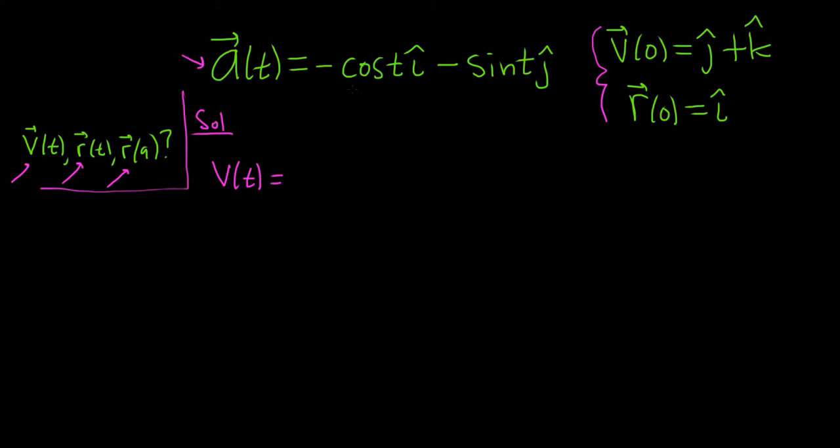So when you integrate cosine, the derivative of sine is cosine. So this is going to be negative sine t, i hat, and the derivative of cosine is negative sine. So when we integrate negative sine, we get a positive cosine t, j hat. Let's not forget to add our arbitrary constant. And note, this is a vector.